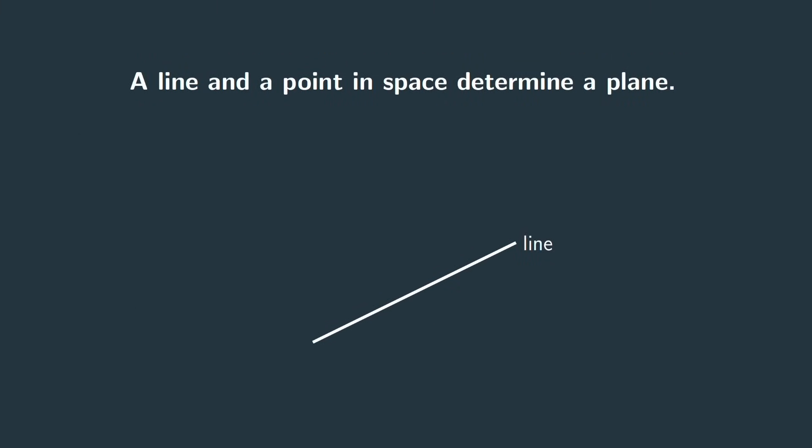We need just one more fact and that is that a line and a point in space determine a plane. It's the unique plane containing both the line and the point. And this is all you need to know to understand why the tracks converge.